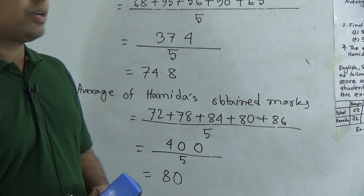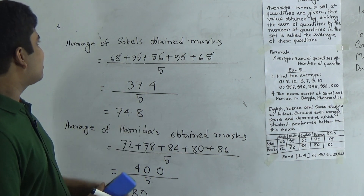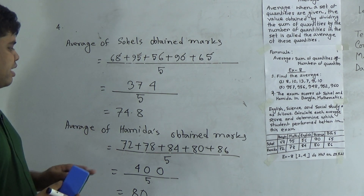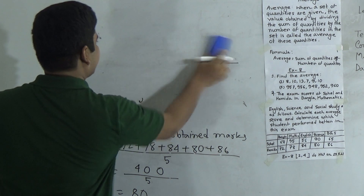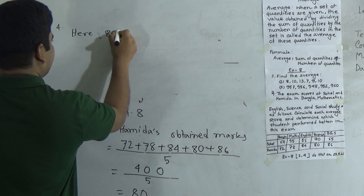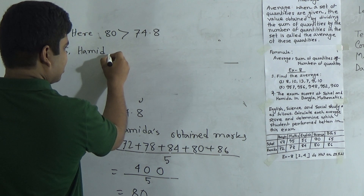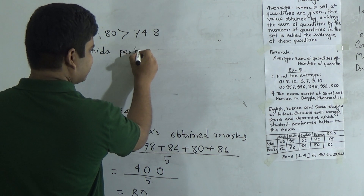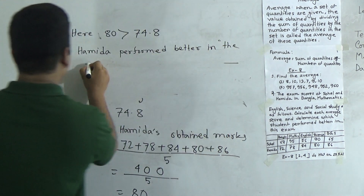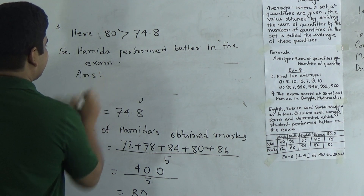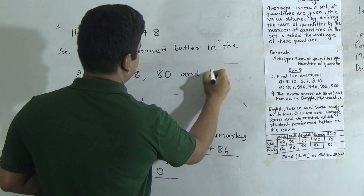This is the first part of this math. Now we find out which student did better in this exam. The average marks of Hamida, 80, is greater than the average marks of Shohel, 74.8. So 80 is greater than 74.8, and Hamida performed better in the exam. The answers are: Shohel's average is 74.8, Hamida's average is 80, and Hamida performed better.